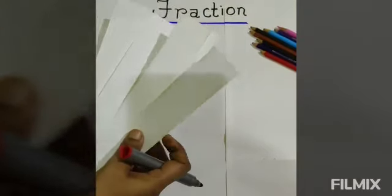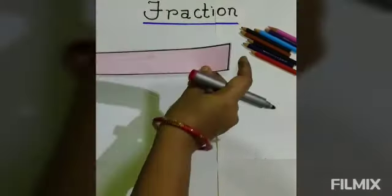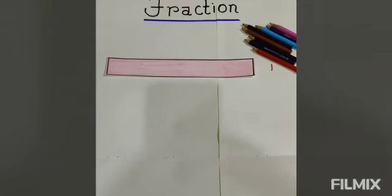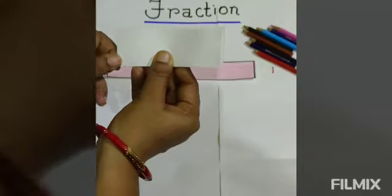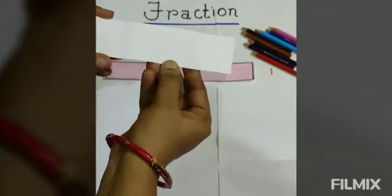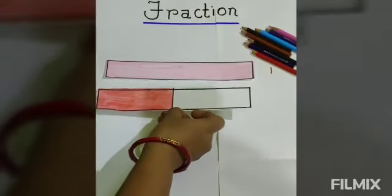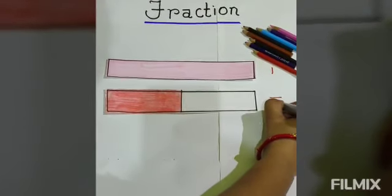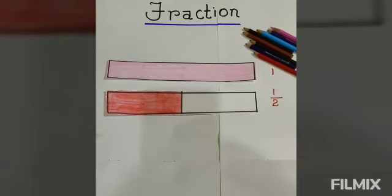Now let's do an activity related to fractions. For this we need a few strips of paper and some pencil colors. We take the first strip of paper and write it as one — this is one whole of the strip. Now we take another strip and fold it into two equal parts. Both parts should be equal. We color one part and write down the fraction for it. The total number of parts are two and the colored part is one, so the fraction is one by two, or one half.